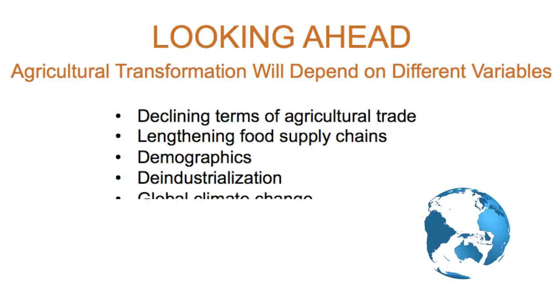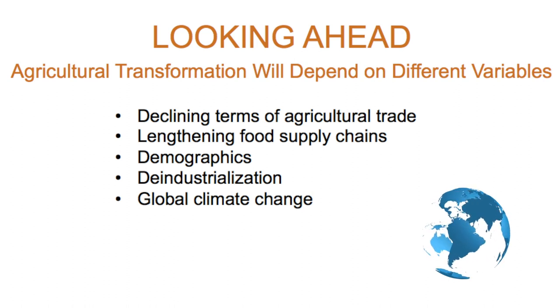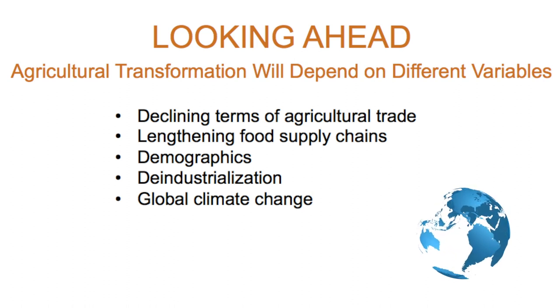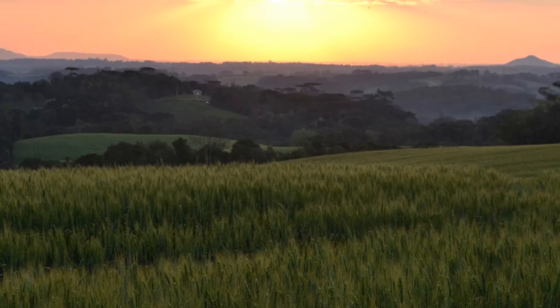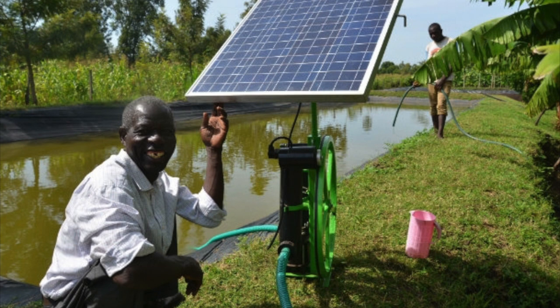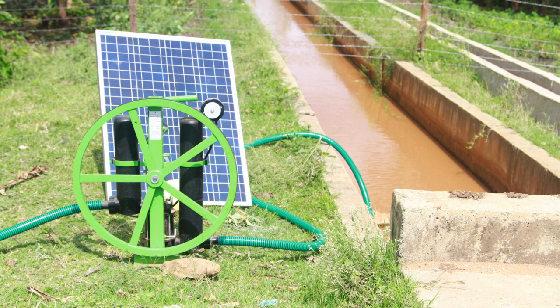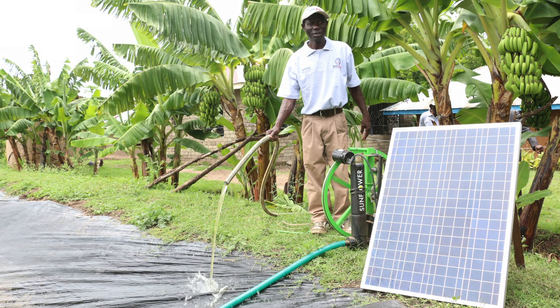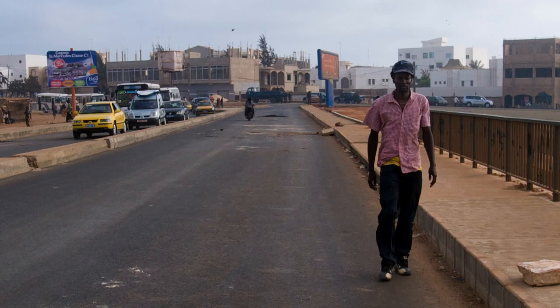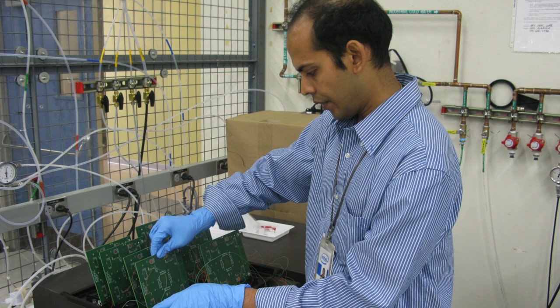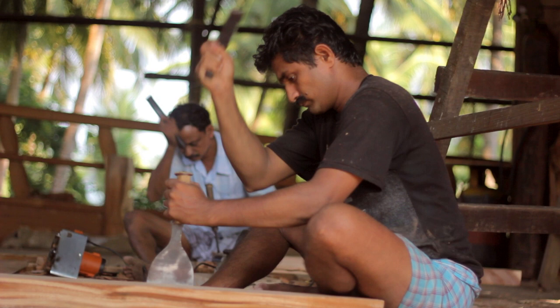Global climate change. We know a lot about adaptation and mitigation to global climate change. Adaptation requires more sustainable and resilient practices. Mitigation limits some agricultural opportunities, but also opens up new ones — and this photo of the solar-powered irrigation pump is a Feed the Future photo from one of our projects. Global climate change also affects urban growth patterns, which will affect the ability of urban areas to create jobs and remain a destination for urban migrants.